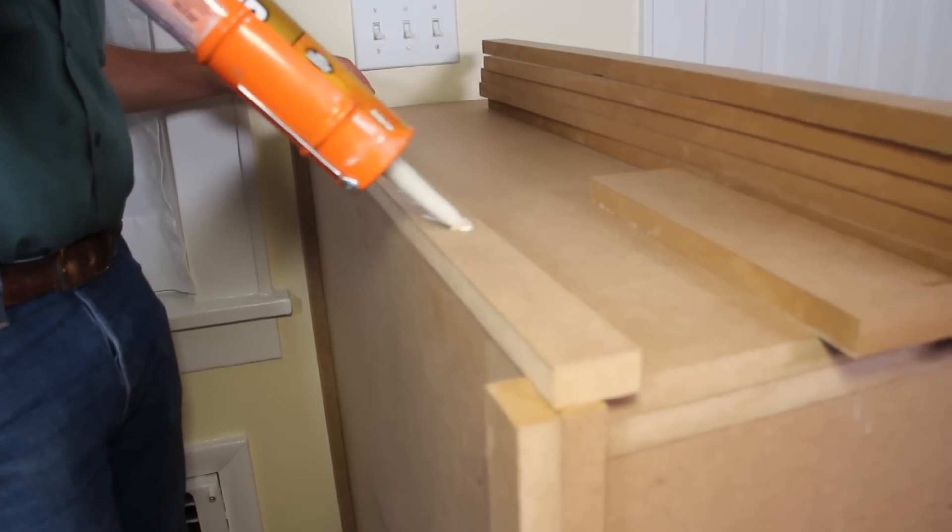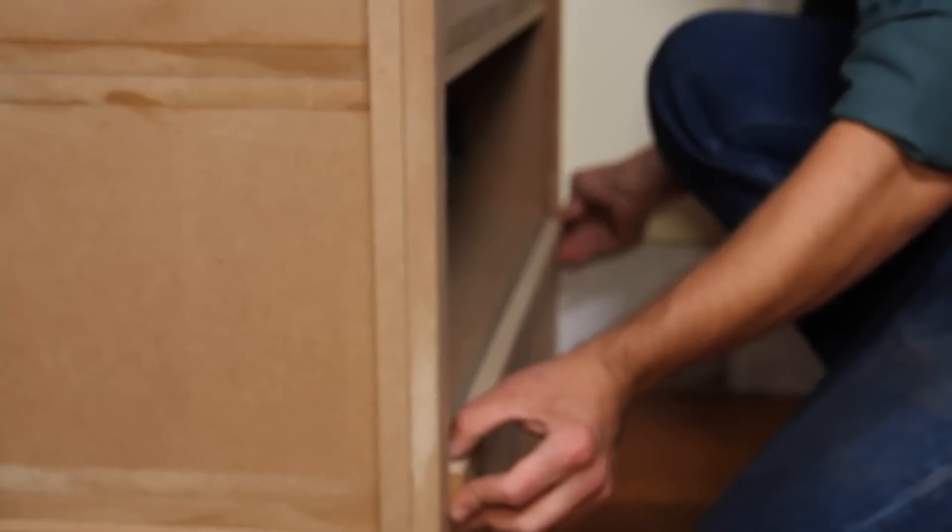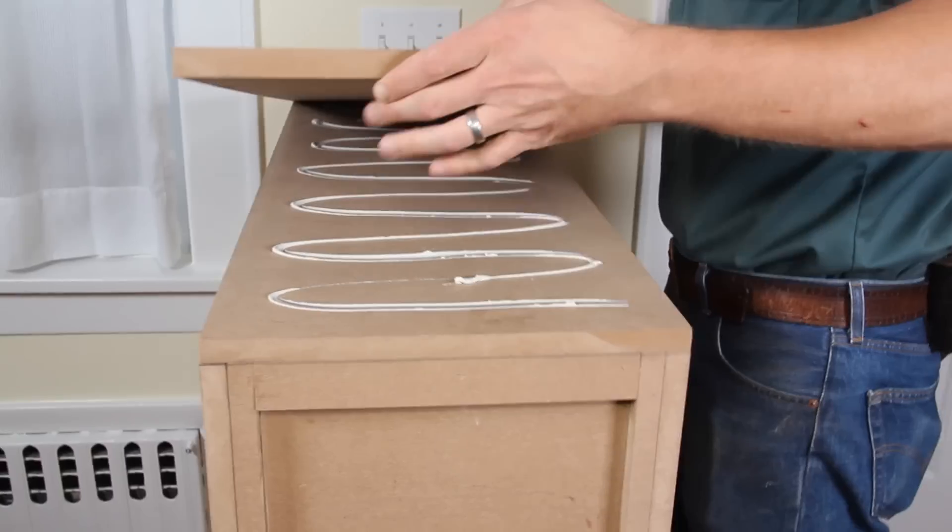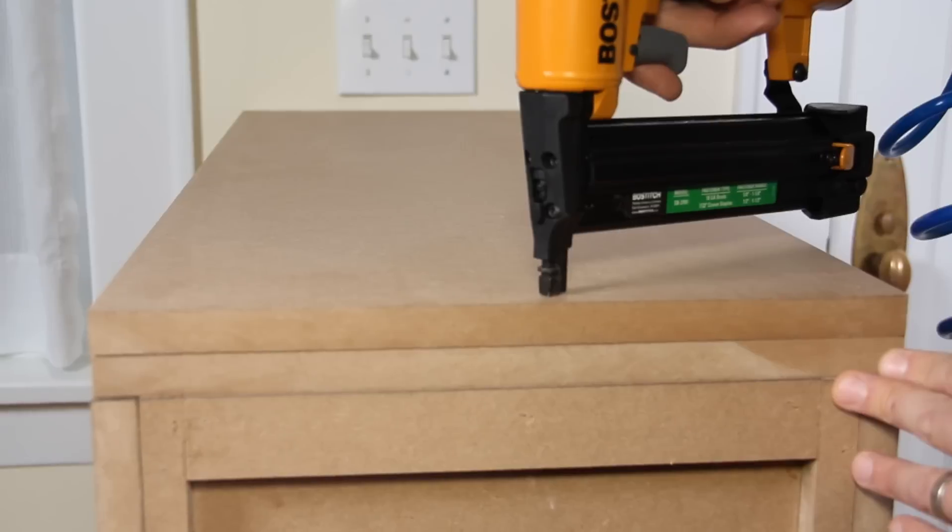With the styles in place, measure, cut, and install the rails. Then you can add two more MDF panels on top of the entire stack that fit flush with the face frame.